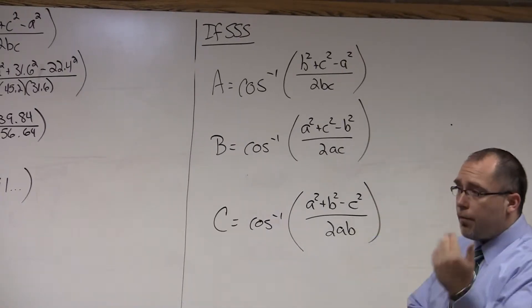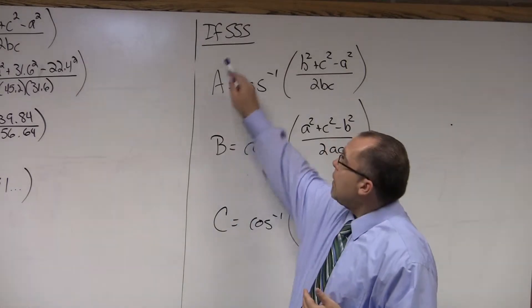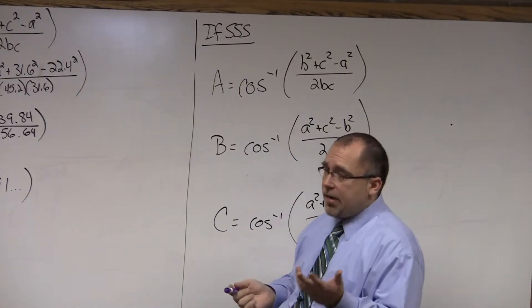So, if we look at the info packet, again on the front page, in order to use the law of cosines to solve for an angle, you have to be given all three sides, or side, side, side.